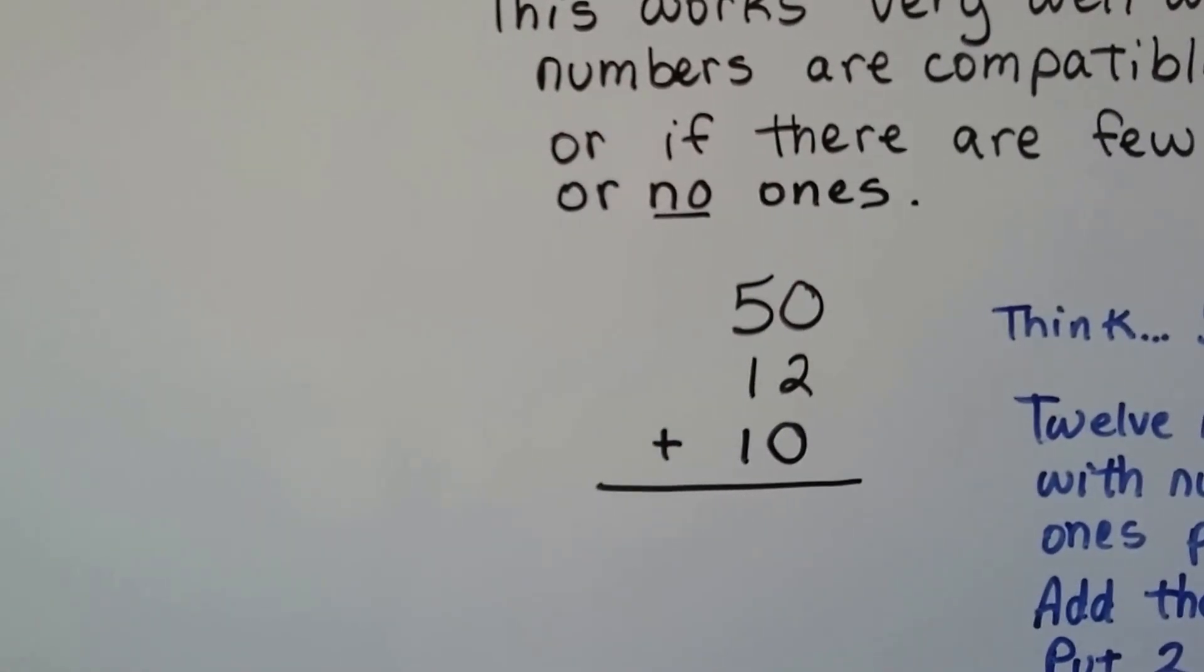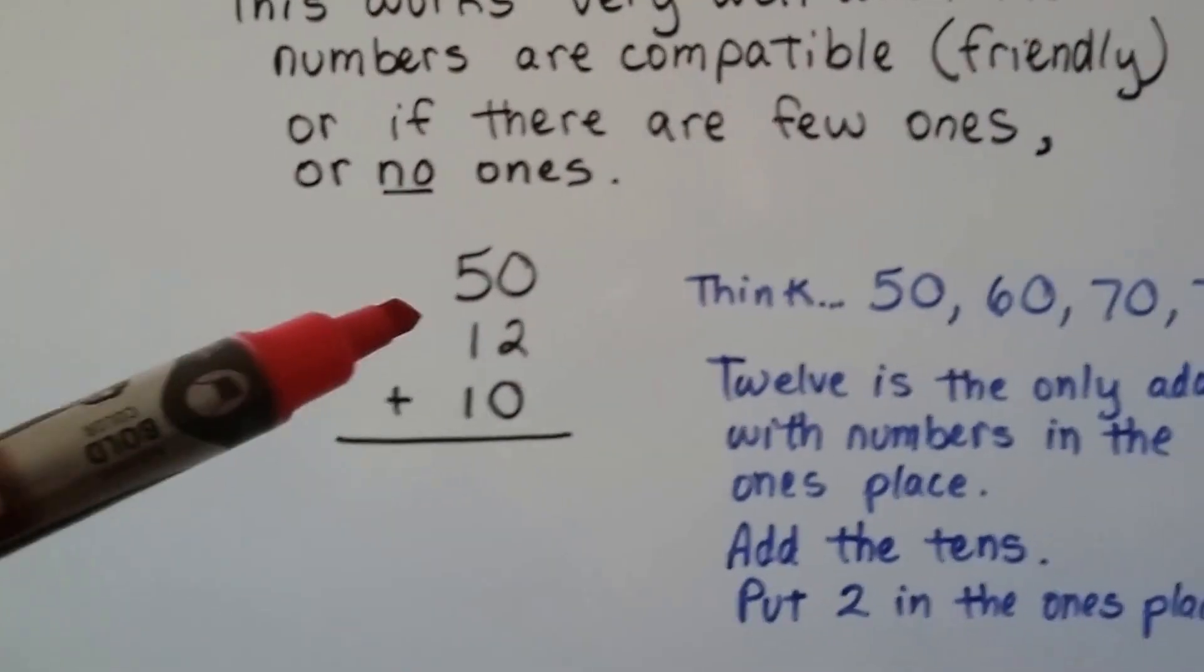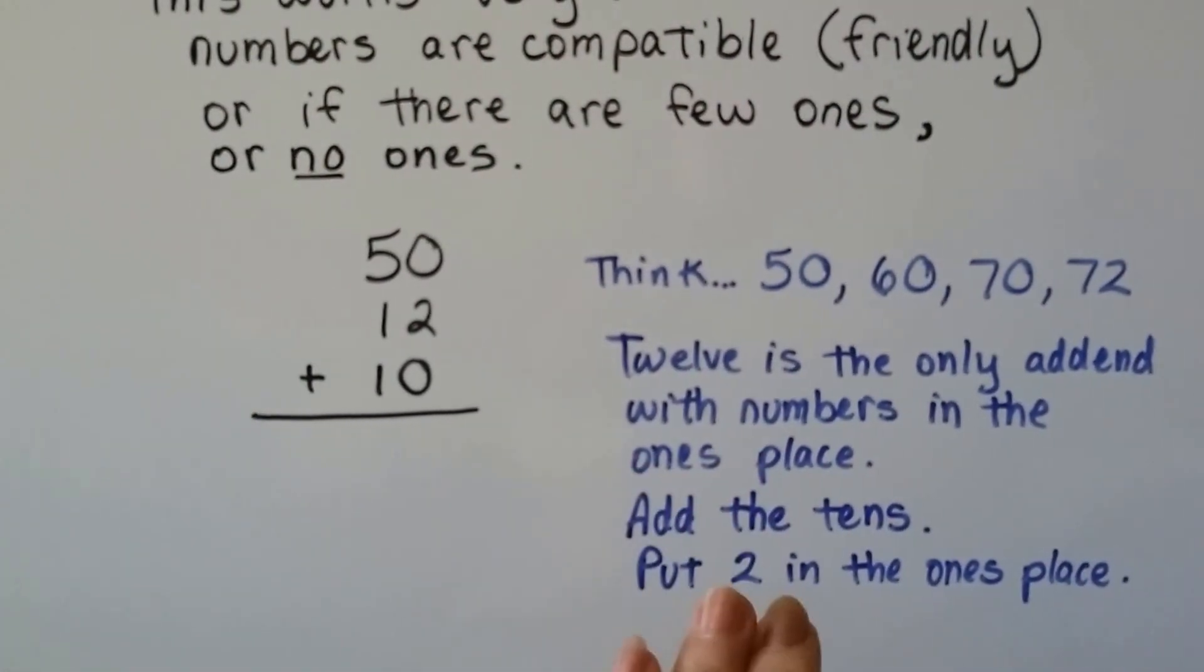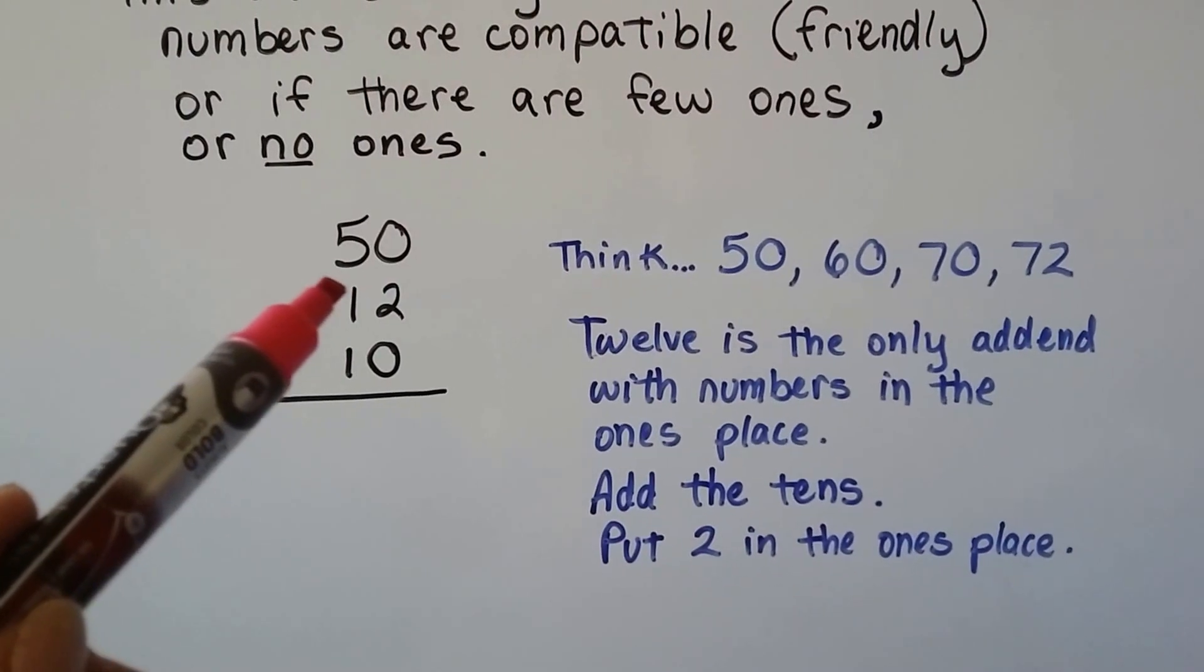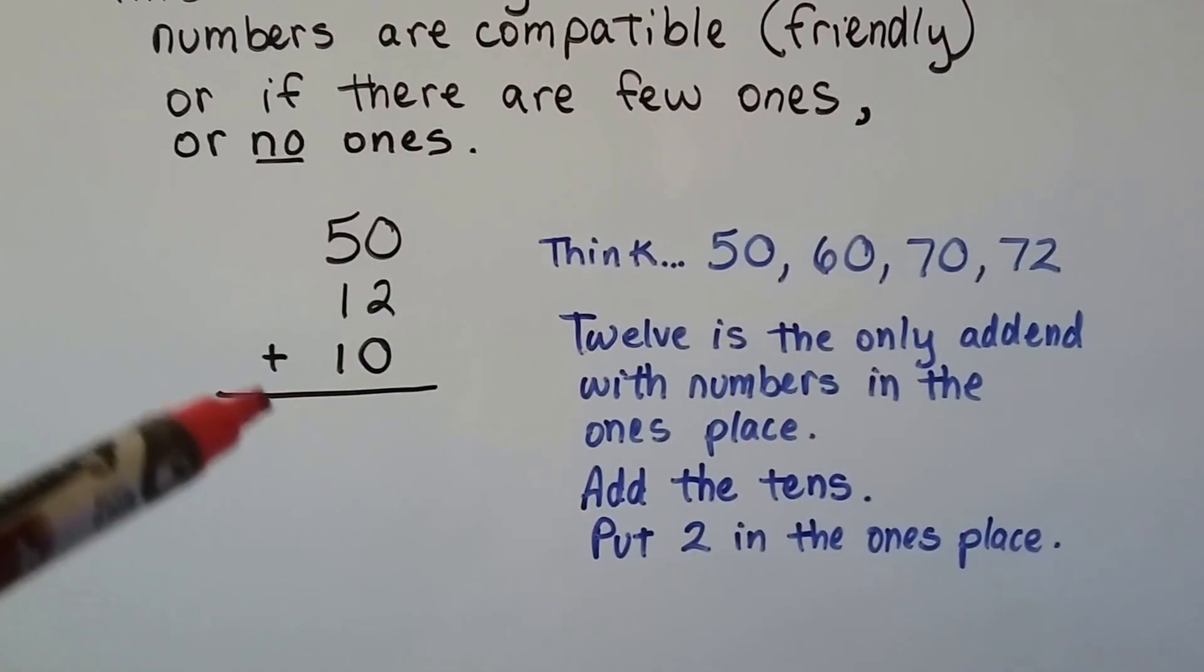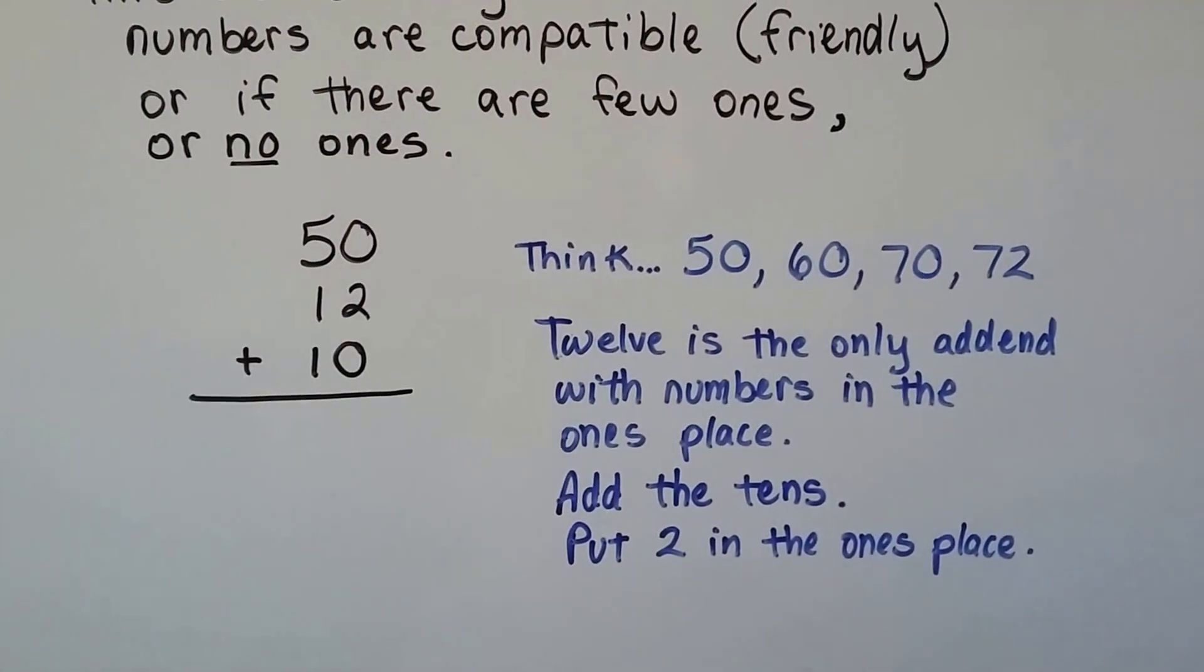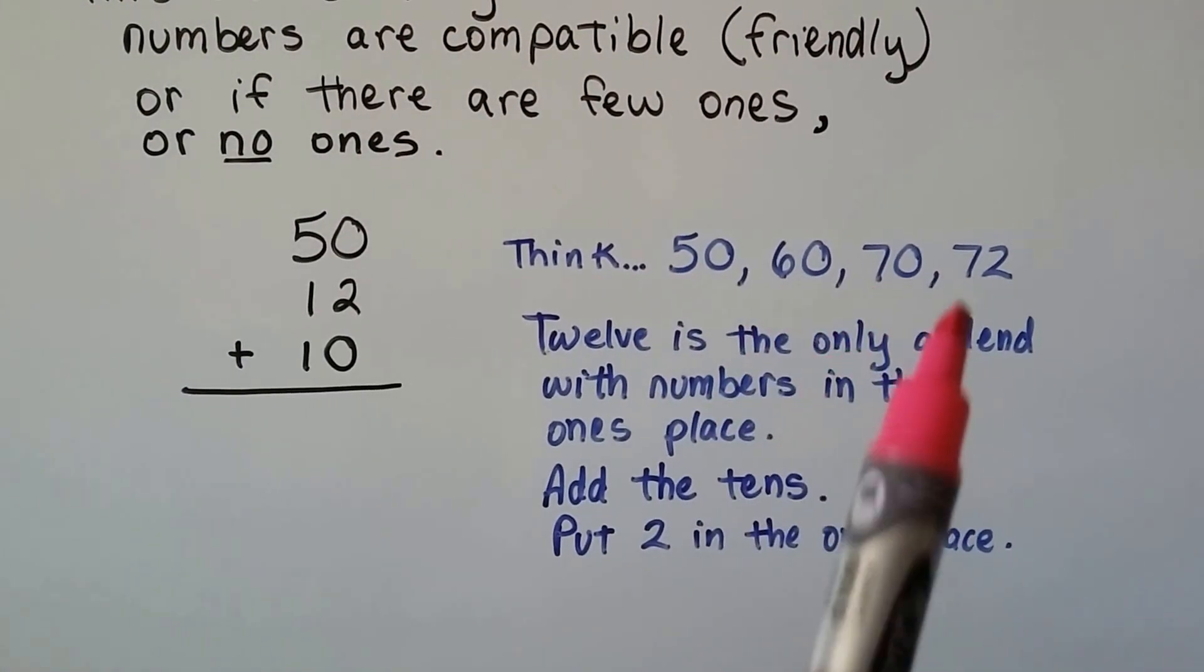Can you do that in your head without writing anything? What we do is, because there's only two ones here, we set that off to the side. The 12 is the only addend with numbers in the ones place. So we add the tens in our head: 50, 60, 70, and then we put the 2 in the ones place. So we think 50, 60, 70, 72.